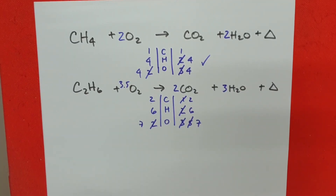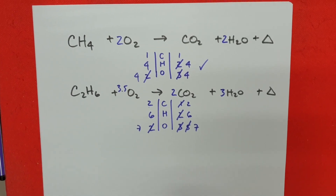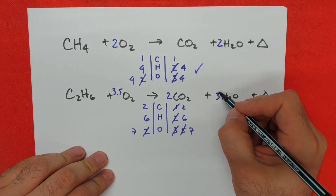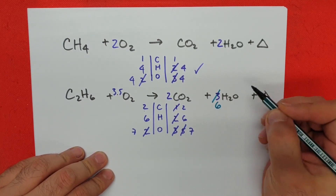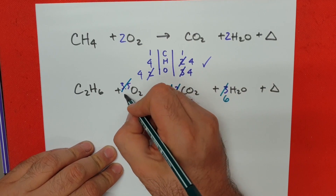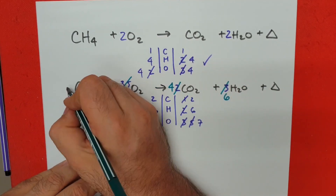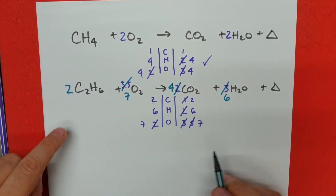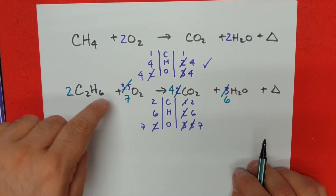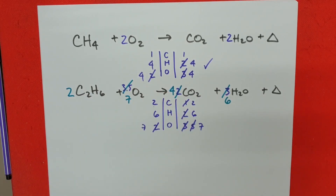However, a rule is we always want whole number coefficients. So once we have a decimal, the last thing we do is multiply everything by two. This becomes six, this becomes four, this becomes seven, and the implicit one becomes a number two. So my final numbers for this reaction are two ethane, seven oxygen, four carbon dioxide, and six water molecules.